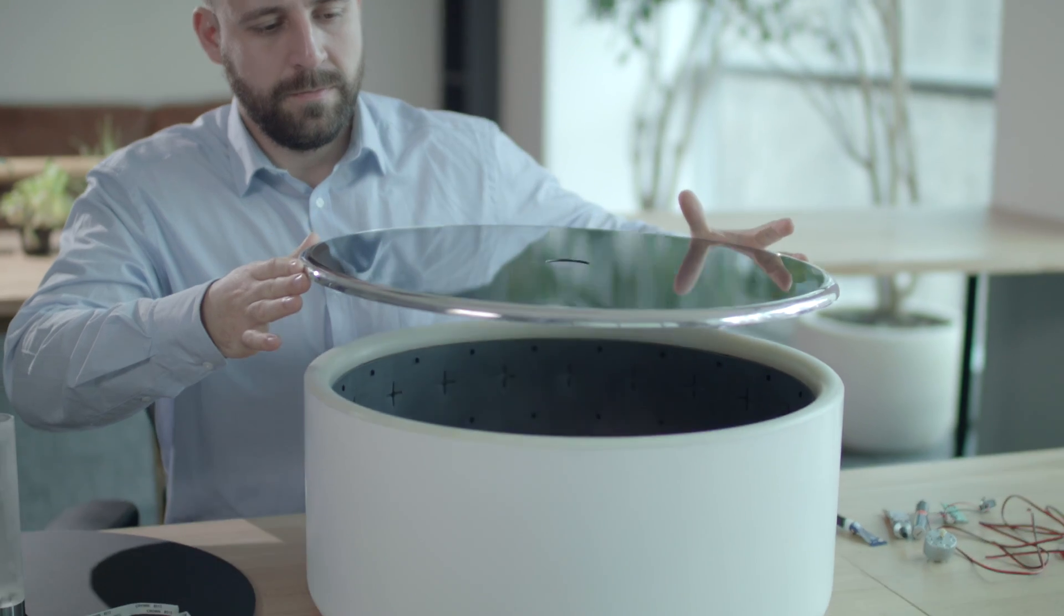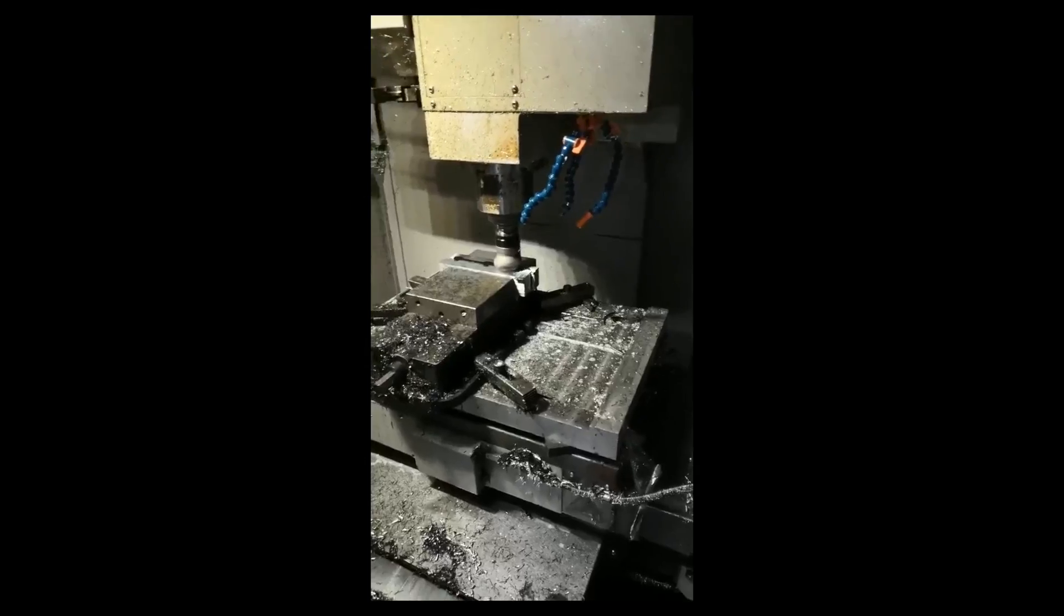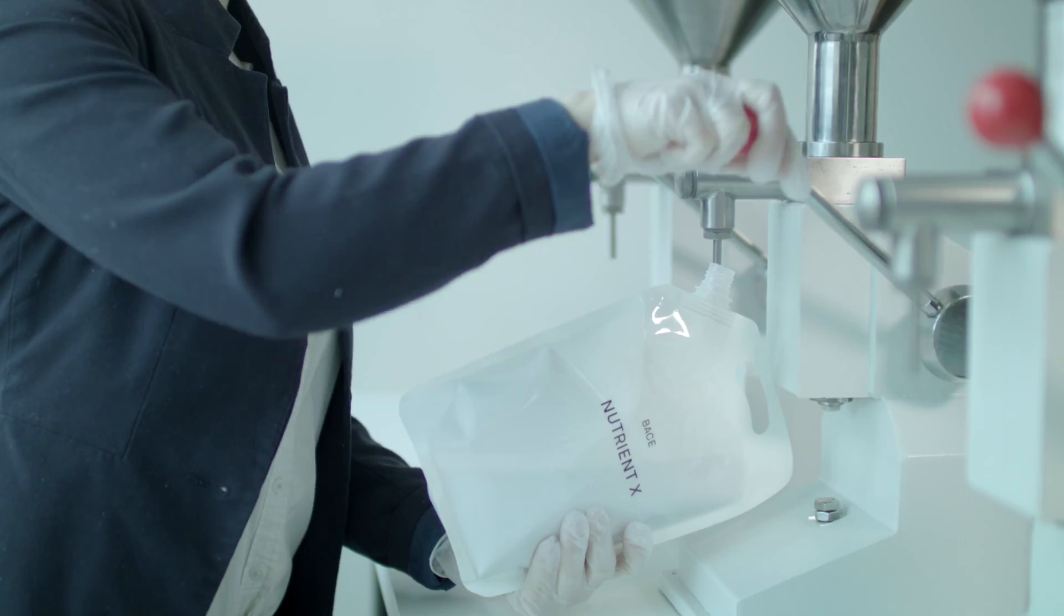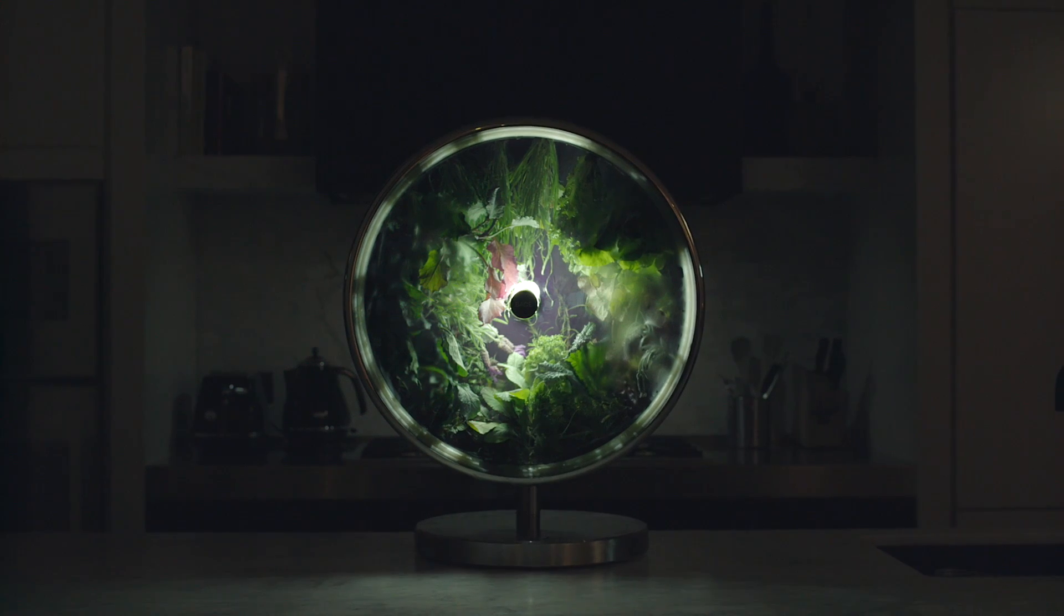We have been working around the clock in Melbourne, Australia, to bring this idea to people's kitchens around the world. Rotofarm is the final answer to growing fruits, vegetables, and herbs right where you need them, in the kitchen.